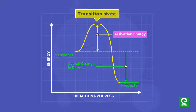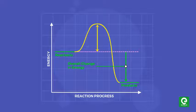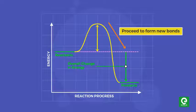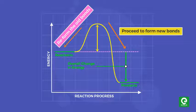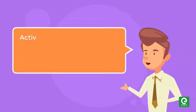The transition state is present at the top of an energy hill. The reaction can either proceed to form new bonds and convert into products, or it can reform the old bonds and return back to the reactants. Therefore, activation energy is also known as the potential energy barrier that separates reactants from products.